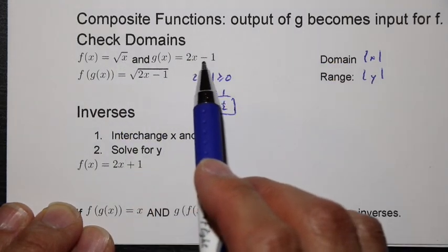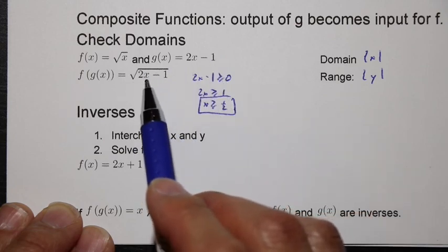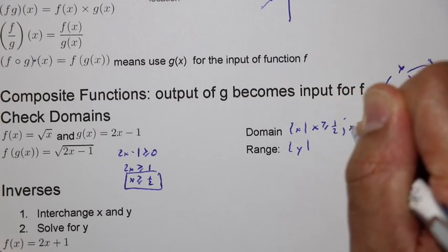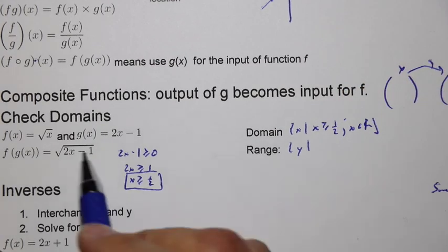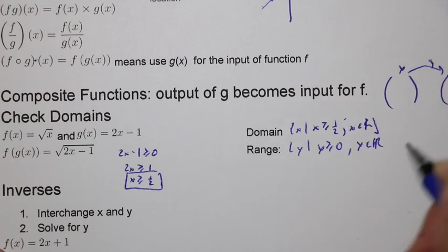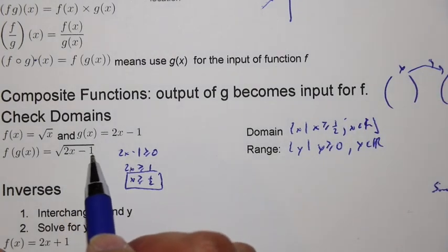So even though the original domain was x has to be greater than or equal to zero, and in g of x, x could be anything, it still gets restricted within this point. So the domain in this case would be x has to be greater than or equal to one half, but x could be any real number. The y values, we'd see, oh, it'd start, again, it'd still start at 1. So here, it'd be greater than or equal to zero. Y is there. But we'd have to check, probably our graphing calculator, to check to see if that works.